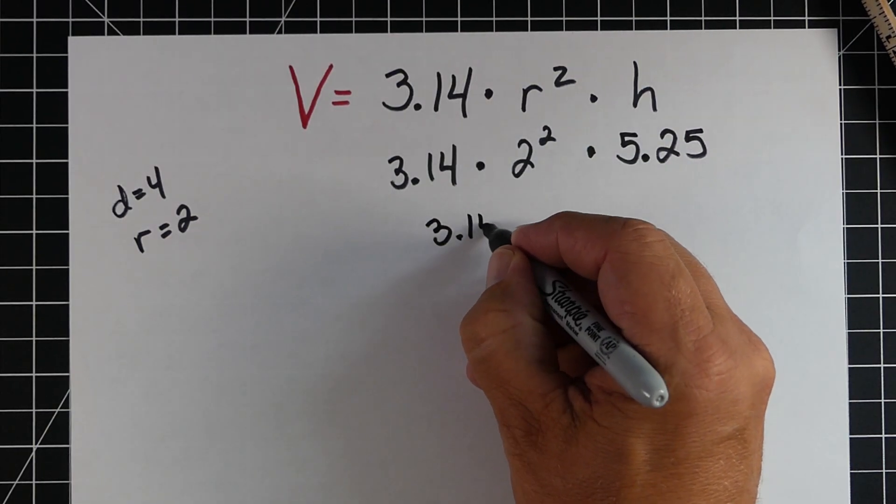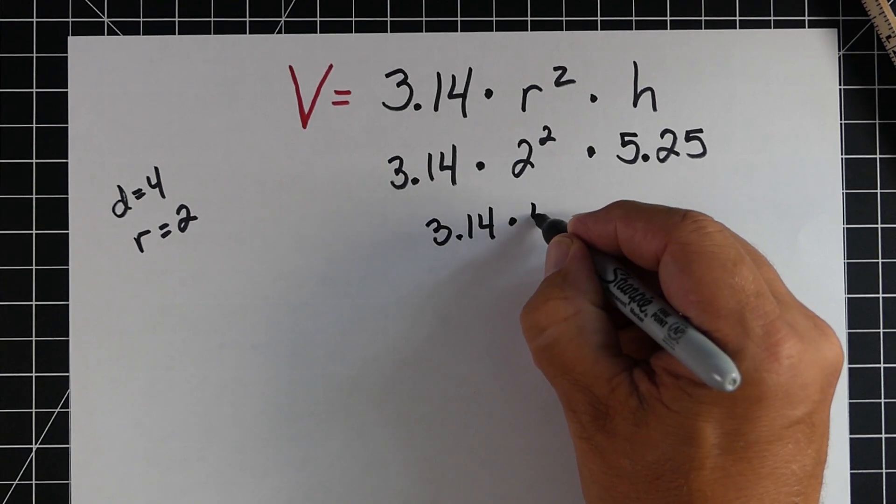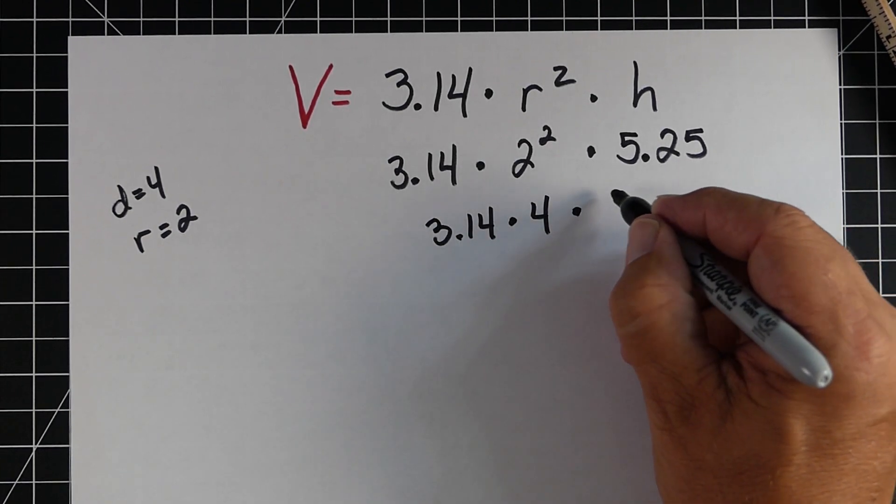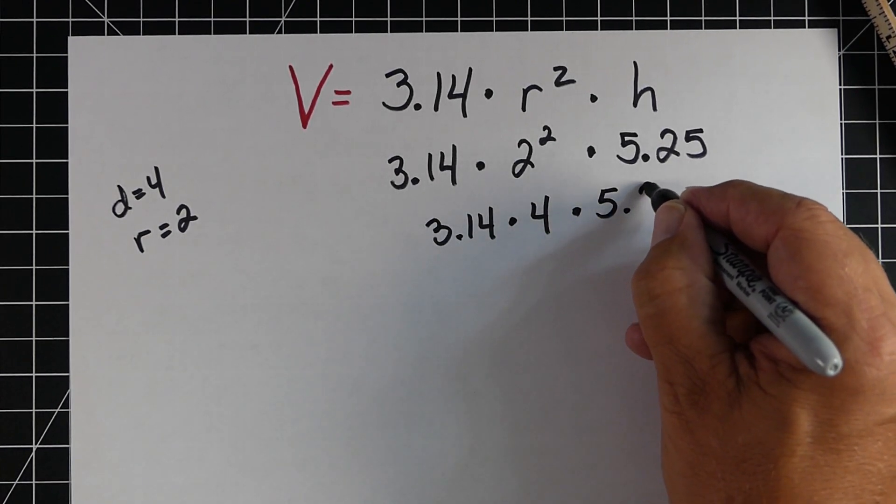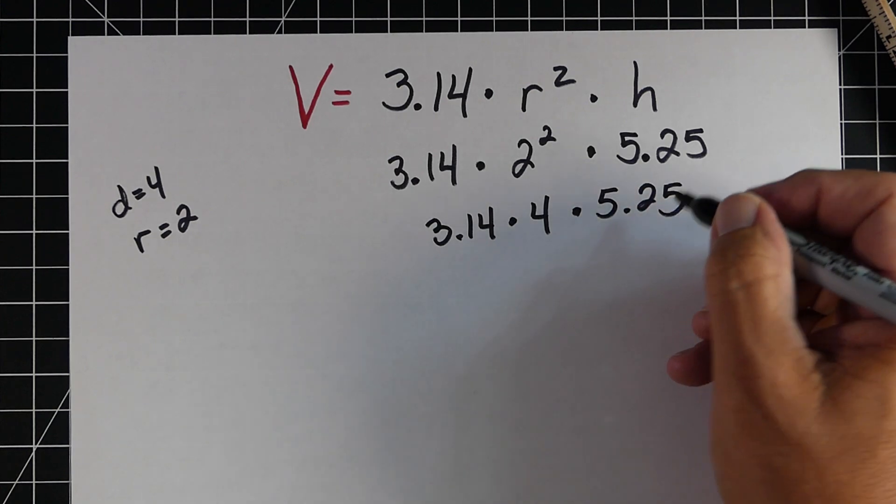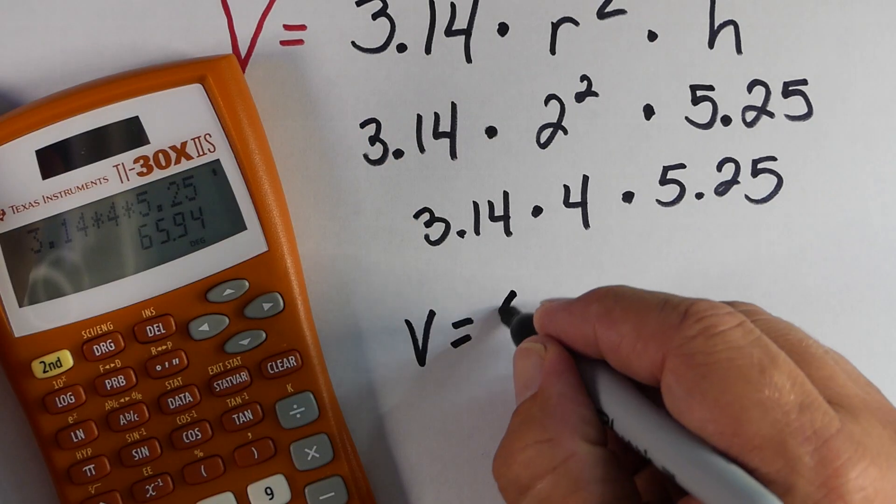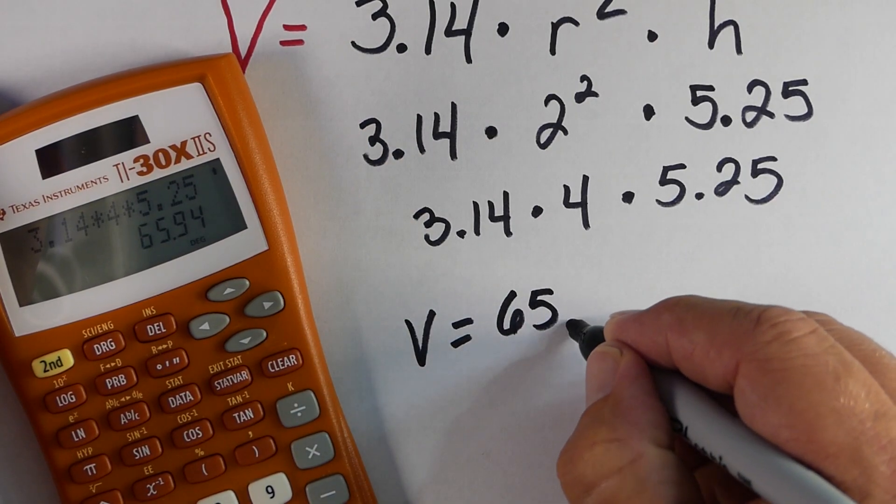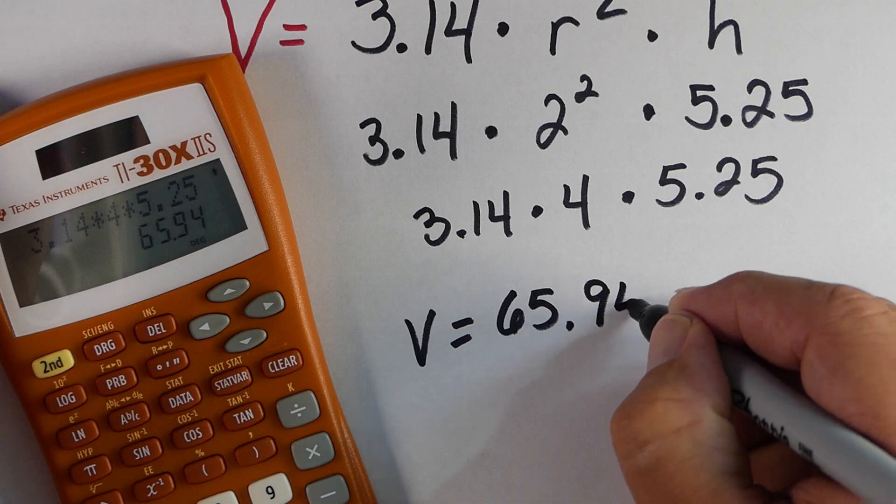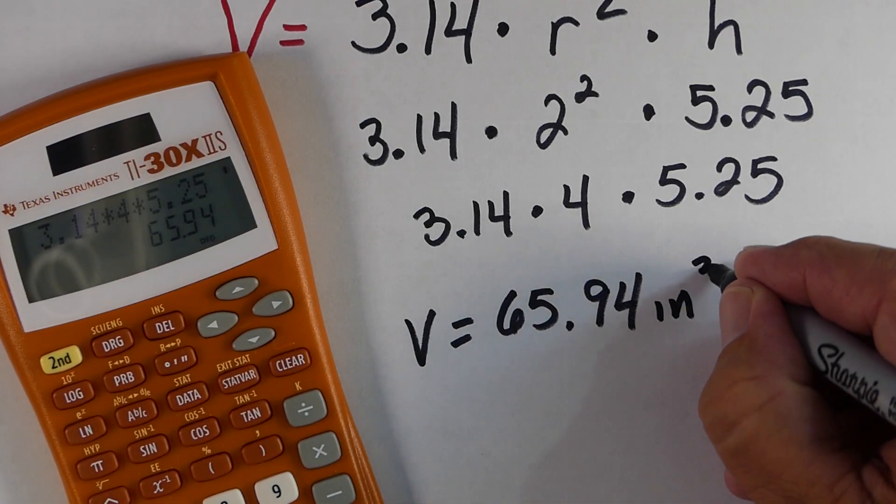So, we have pi times 2 squared times 5.25. We know that the 2 squared would be 4, so I can just kind of do that in my head. So, now we have pi times 4 times 5.25. And when we do that, that's going to give us our answer to the volume of this particular cylinder, which is 65.94. And then this would be inches cubed.